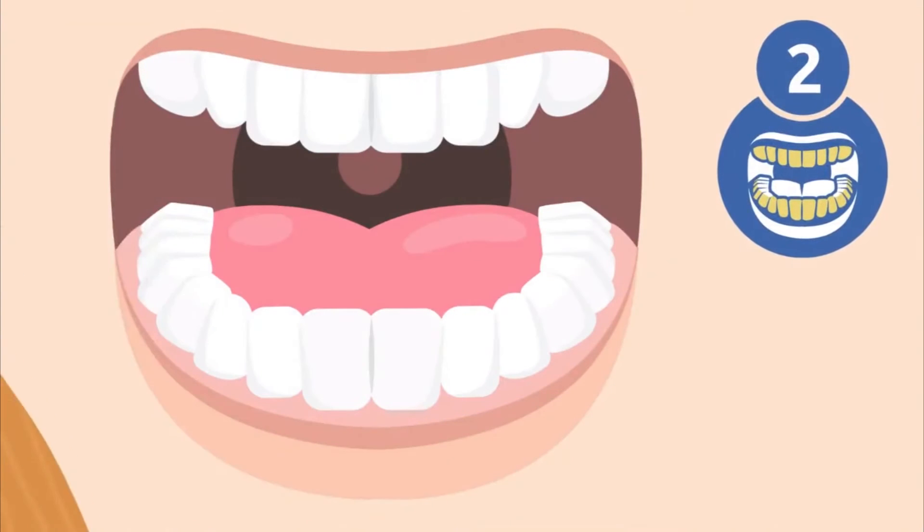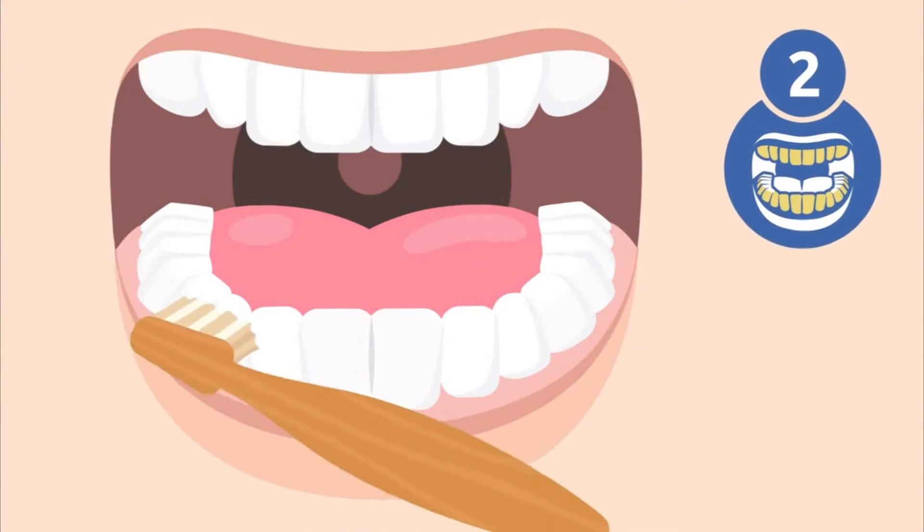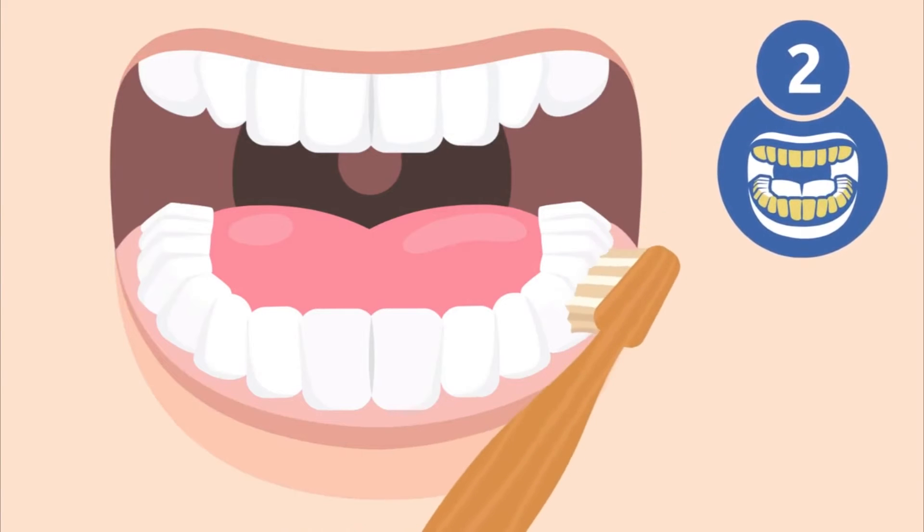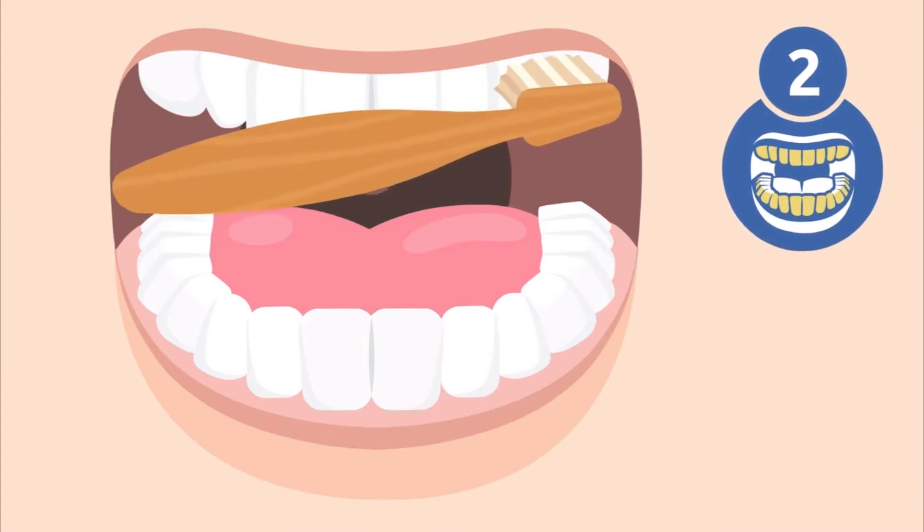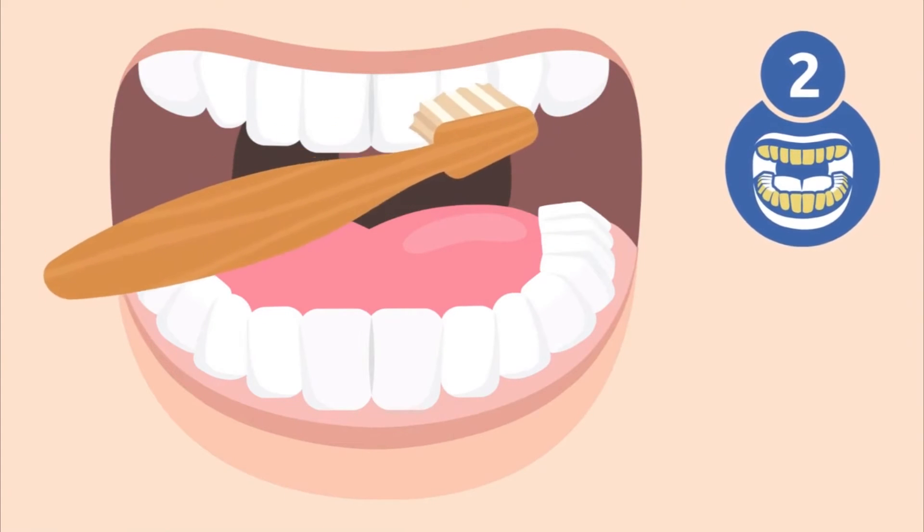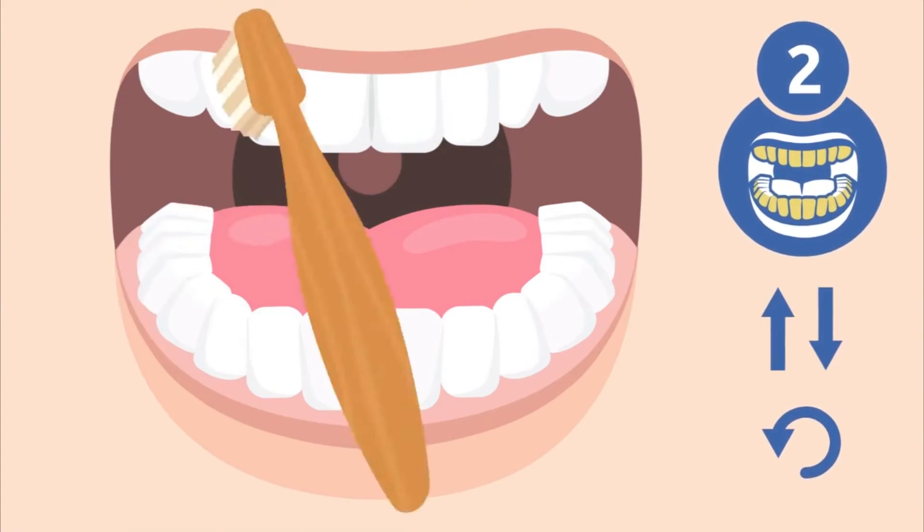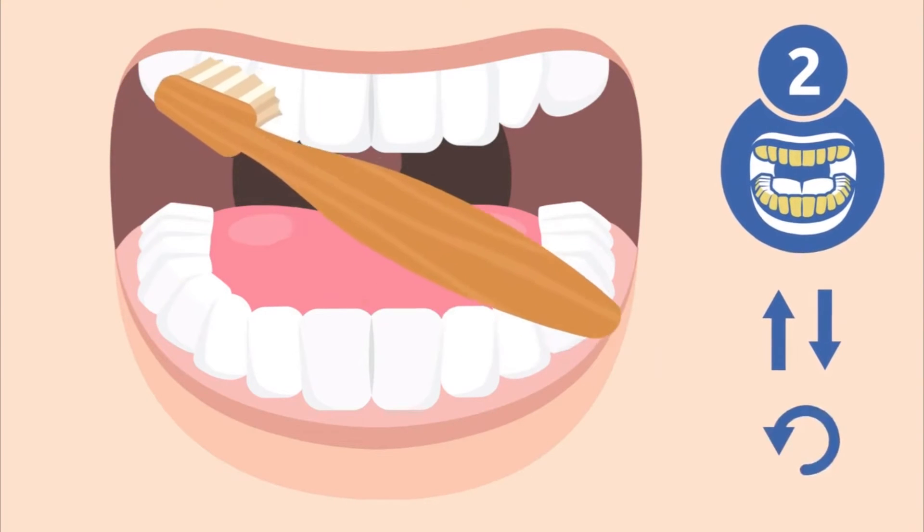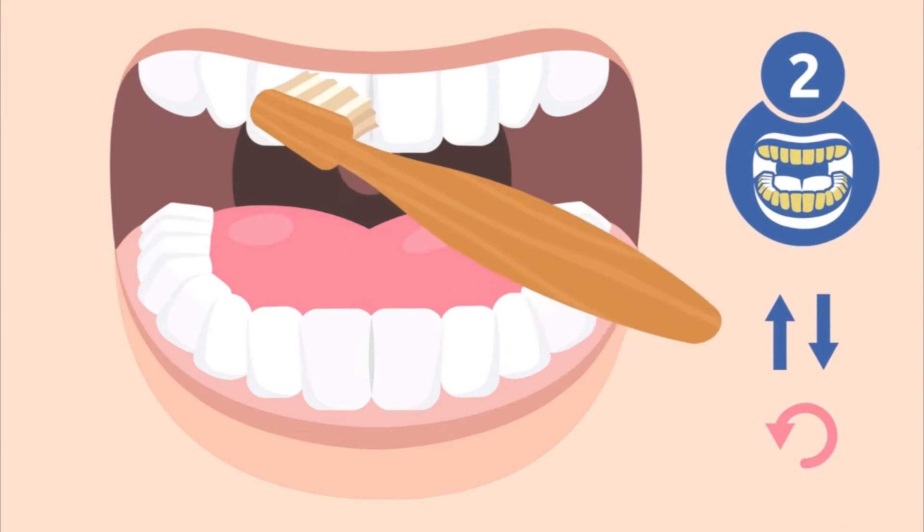Step two: Start brushing your back teeth and molars. Brush the outside of your upper and lower teeth. Hold the toothbrush at a 45-degree angle. Movements should be gentle and short, brushing the teeth from top to bottom and from bottom to top. You could also move the toothbrush in small circular motions.